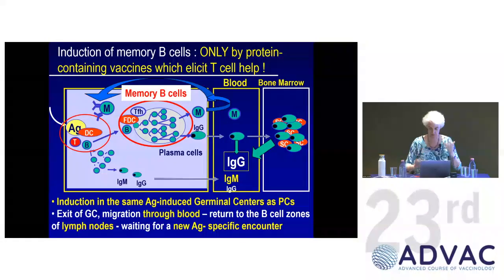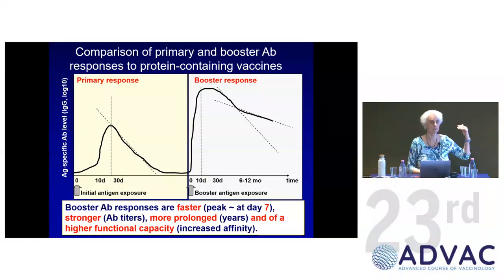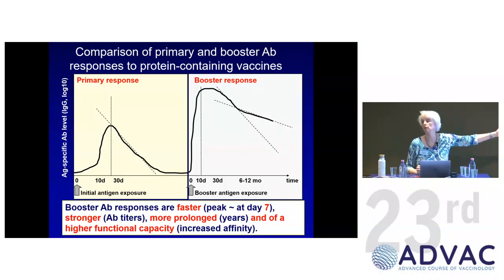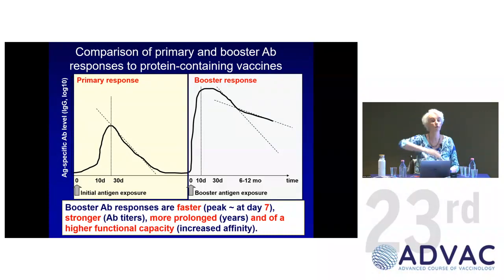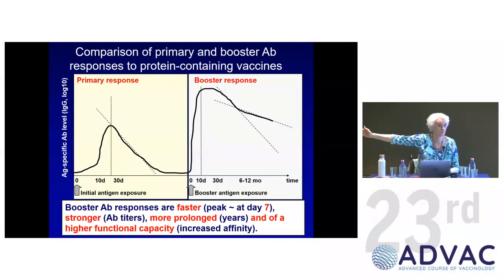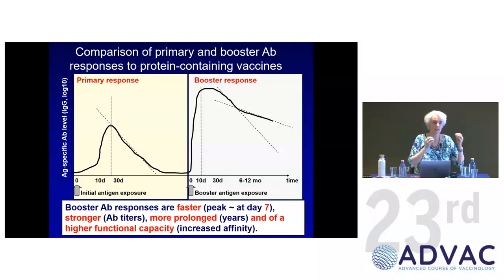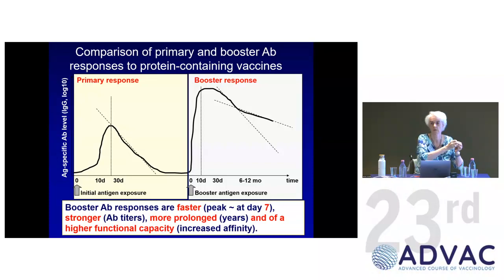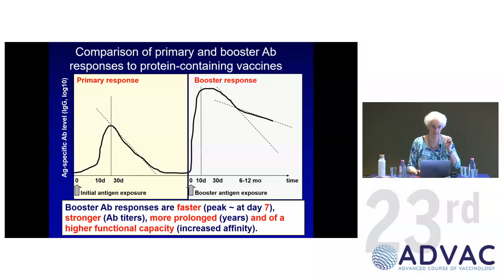Because you have these memory B cells waiting, the booster — the anamnestic response — is going to be much higher, much faster, and last much longer. This is because a memory B cell is not the same as a naive first-grade B cell: it has gone through university, so it knows how to do things better, faster, and longer.